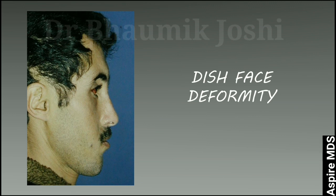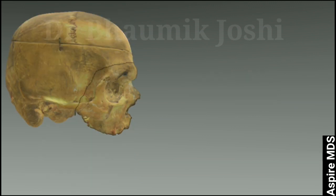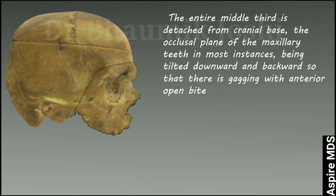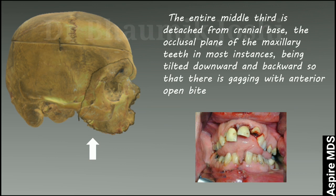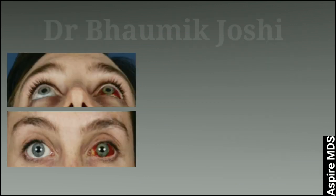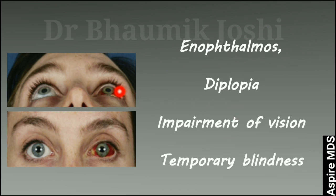We will also see dish face deformity. Because the entire middle third is detached from the cranial base, the occlusal plane of the maxillary teeth will be tilted downwards and backwards. When the patient tries to close the mouth it gets locked — this is known as gagging of occlusion — leading to anterior open bite. On examining the eyes, there will be anophthalmos, meaning the eye globe is pushed posteriorly. The patient may have diplopia (double vision) or impaired vision or even temporary blindness.